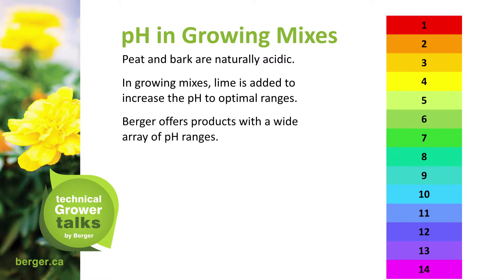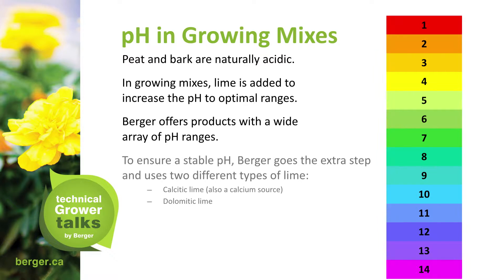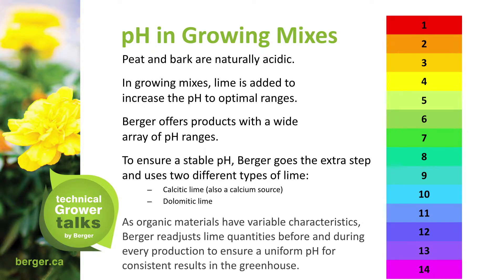Berger offers products with a wide array of pH ranges to ensure a stable pH. Berger goes through the extra step and uses two different types of lime: calcitic lime, also as a calcium source, and dolomitic lime. As organic materials have variable characteristics, Berger readjusts lime quantities before and during every production to ensure a uniform pH for consistent results in the greenhouse.